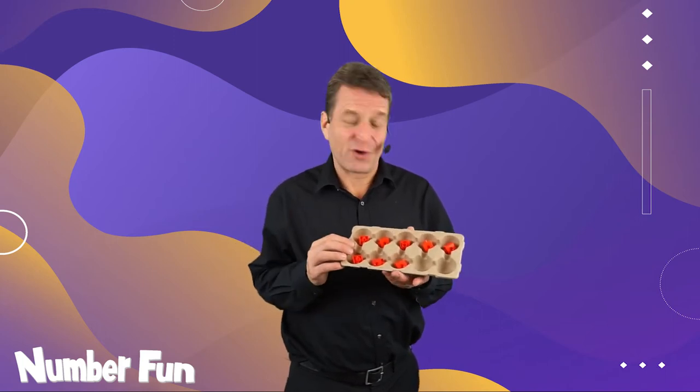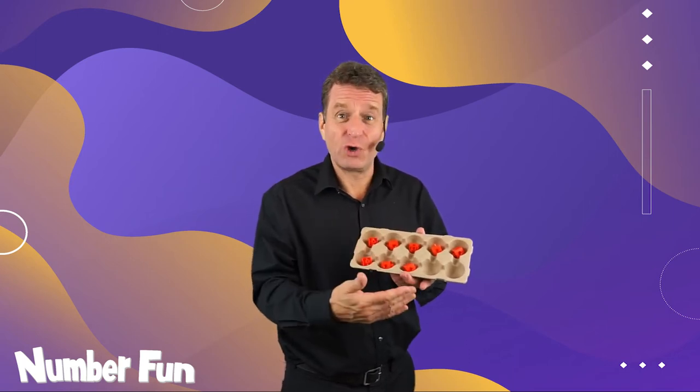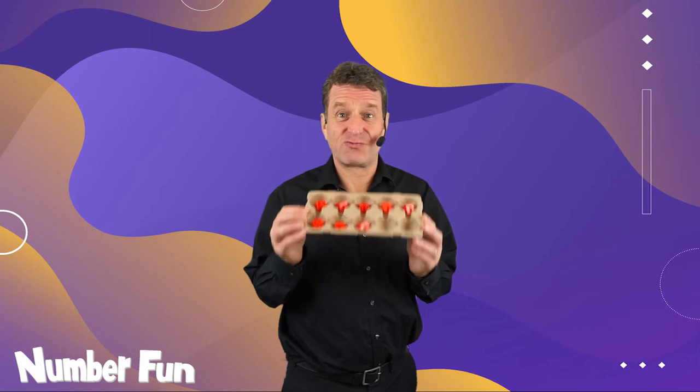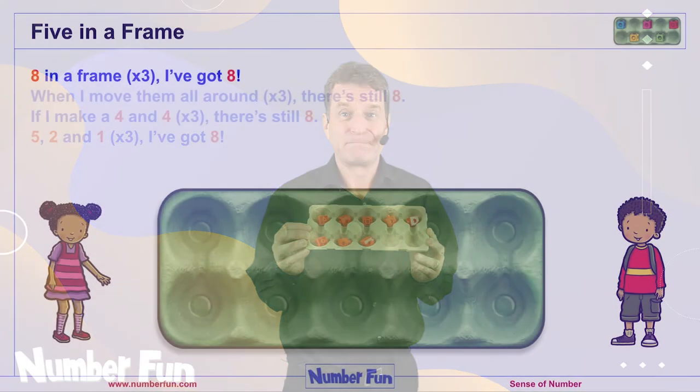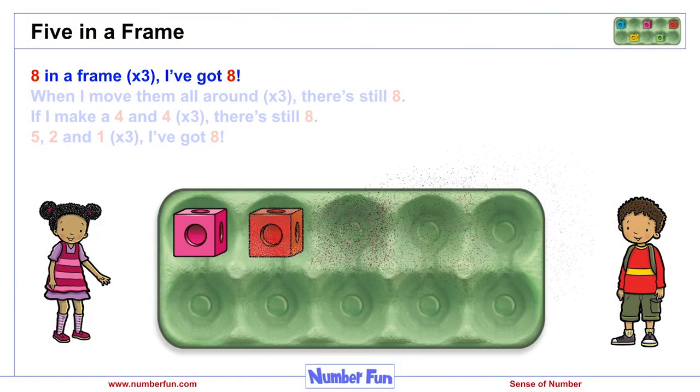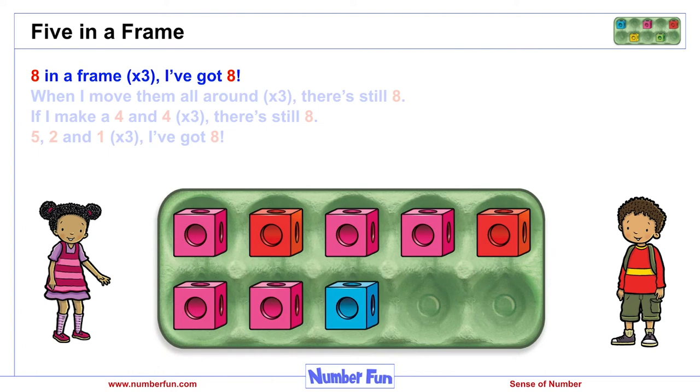Here's a tip for you. Egg boxes are brilliant. They can hold counters, they can hold cubes, and we can represent things really clearly within them. Let's arrange eight as five and three more in our tens frame.